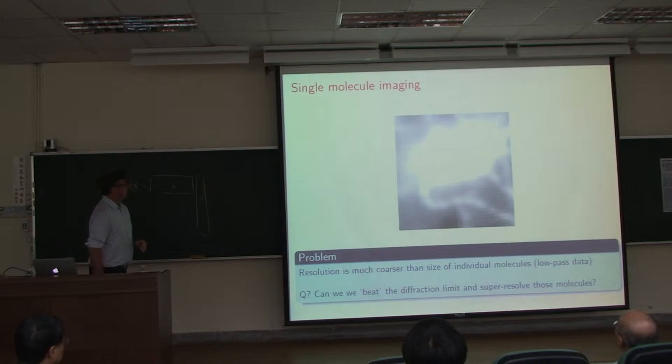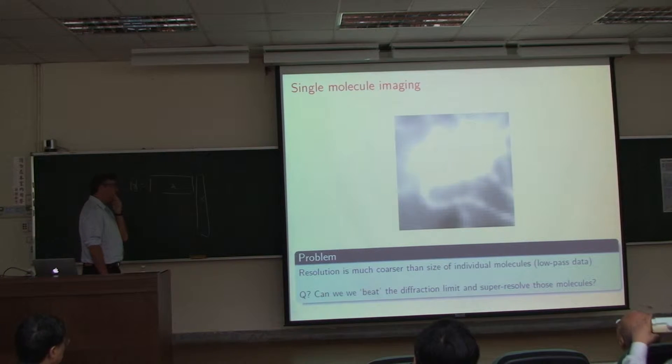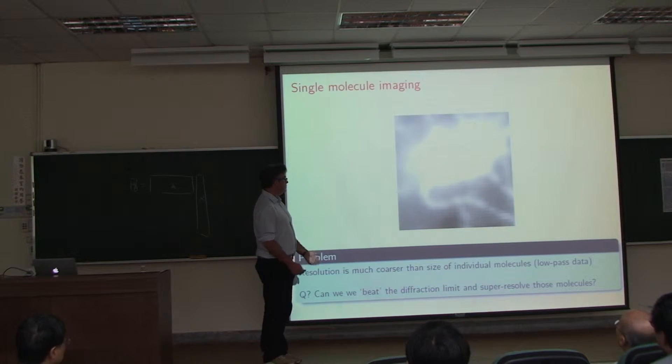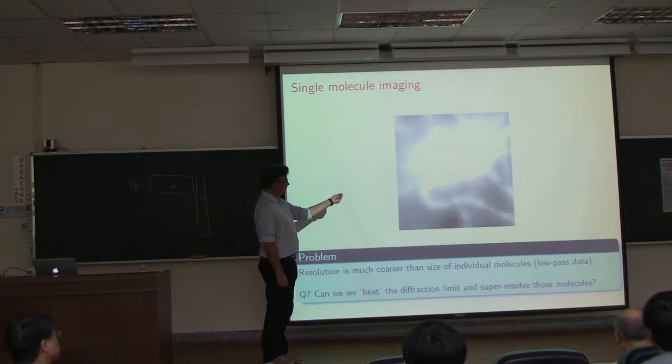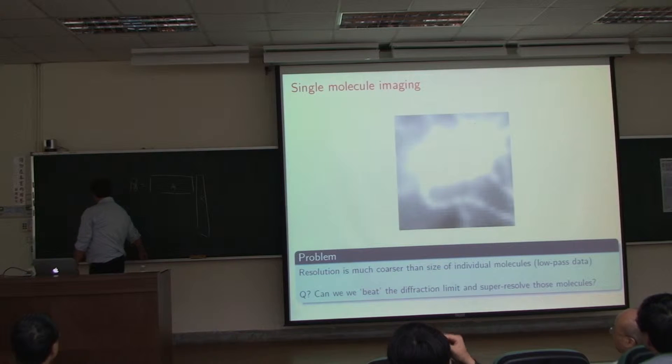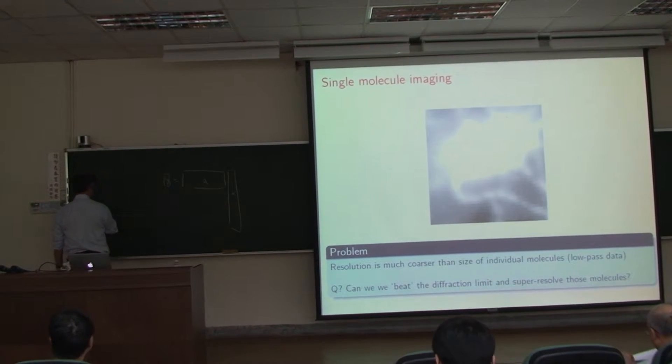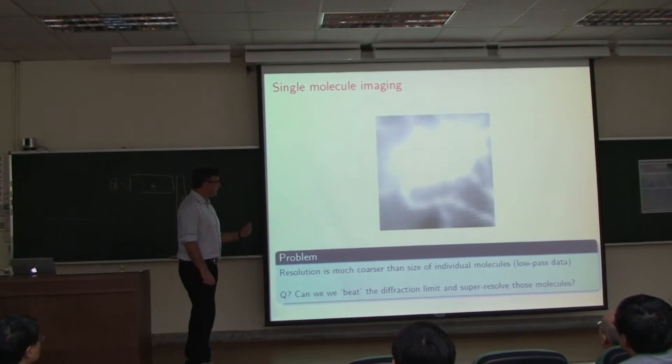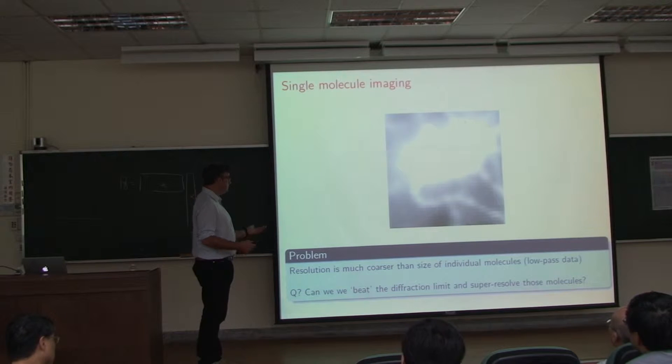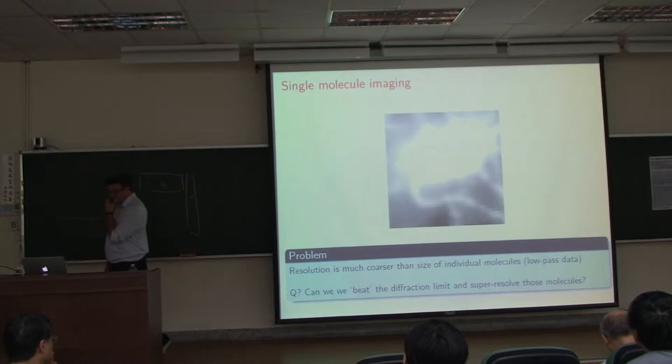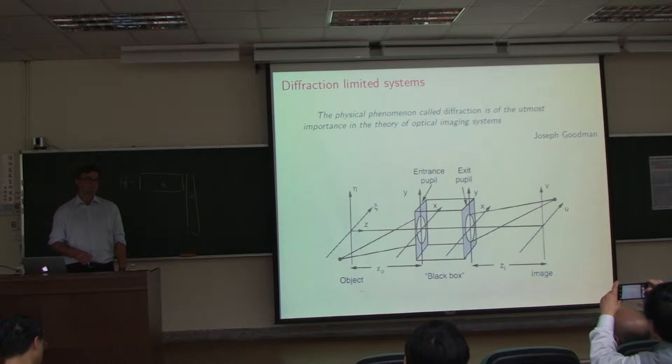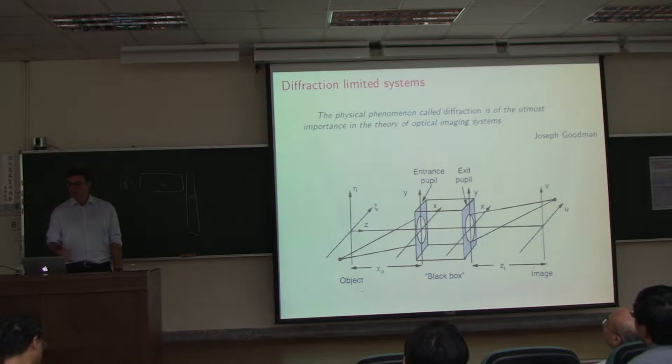The problem is that when you look at how molecules appear under microscopes, you have a resolution which is much coarser than the size of individual molecules. You would like to know the location of the molecule very precisely, but we don't, because the picture you get under your microscope shows the molecule appearing much wider than what it really is. Why? Diffraction. The question everybody asks in physics or optics is: can we beat the diffraction limit and super-resolve point sources?